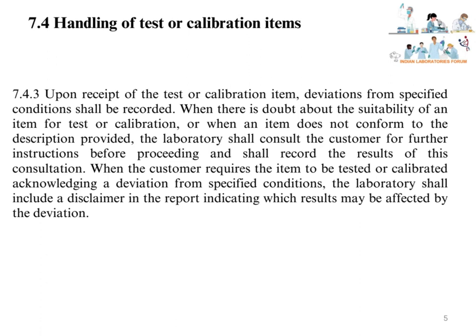Laboratory has to use the unique identification for all laboratory activities for specific samples, and all records of specific samples should be traceable with the unique identification. The system shall ensure that items will not be confused physically or when referred to in records or other documents, meaning the laboratory should not give the same identification to two or more samples - each identification should be unique to each sample. Upon receipt of the test or calibration item, deviations from specified conditions shall be recorded. When there is doubt about the suitability of an item for test or calibration, or when an item does not conform to the description provided, the laboratory shall consult the customer for further instructions before proceeding and shall record the results of this consultation.